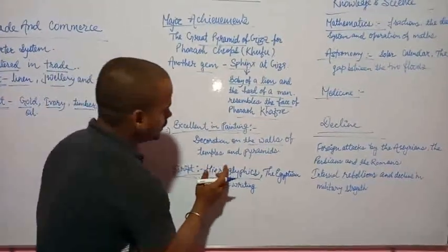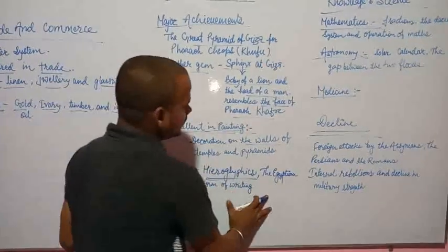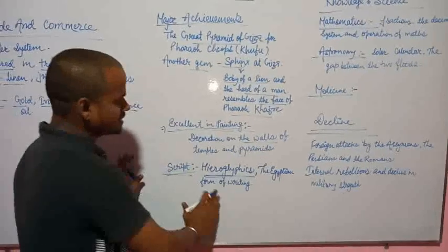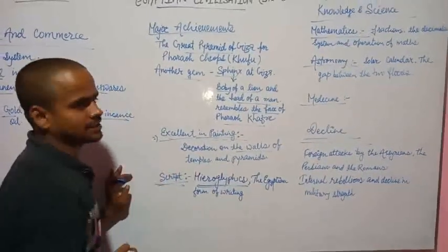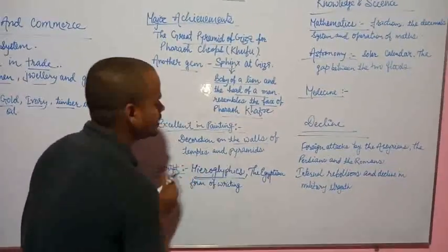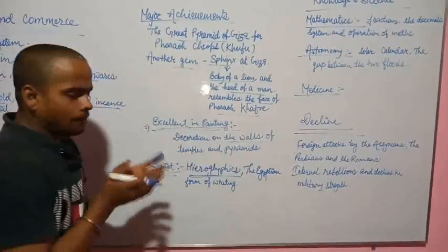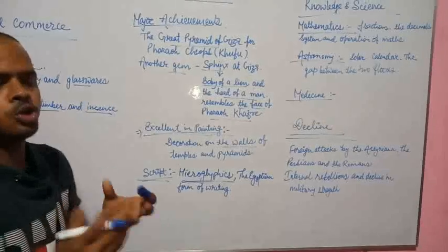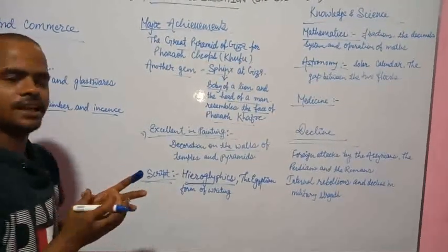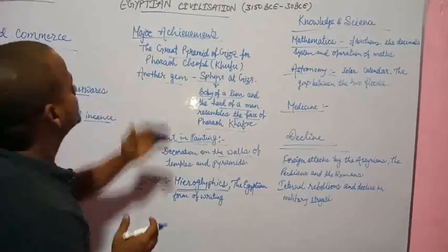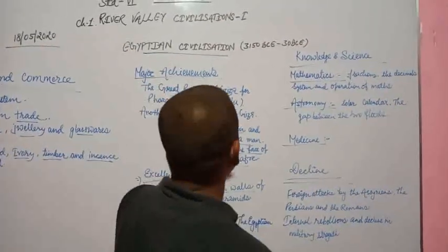Script. Hieroglyphics was the Egyptian form of writing. It is a system in which pictures are used to show words. People in this civilization used pictures to represent words.